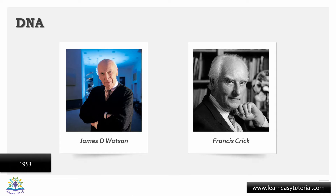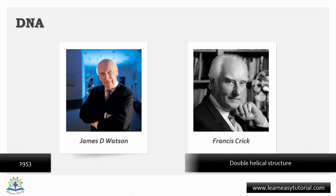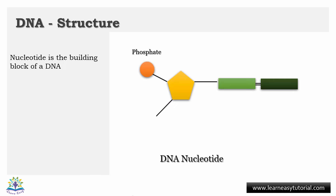In 1953, Dr. James Watson and Francis Crick proposed the double helical structure of DNA, for which they received the Nobel Prize. The nucleotide is the building block of DNA — it is made up of a phosphate molecule, deoxyribose sugar, and a nitrogenous base.